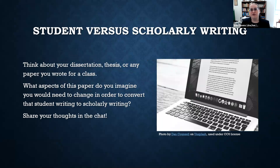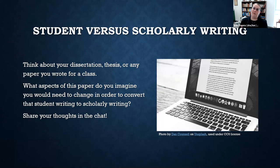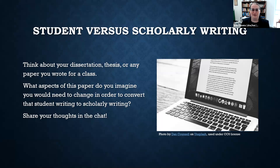Thinking about student versus scholarly writing — I'd like you to take a minute to think about your dissertation or thesis. If you haven't gotten to that point yet, just think about another paper you've written for a class. What aspects of that paper do you imagine you might need to change in order to convert it from a class paper to a scholarly journal article? You're welcome to type in the chat, or since there's only a few of us, you're welcome to just unmute and share out loud.